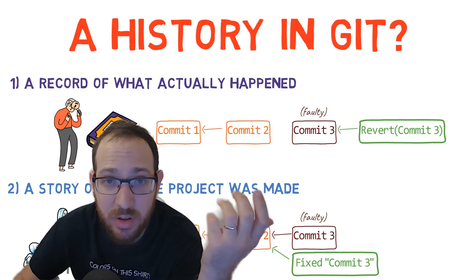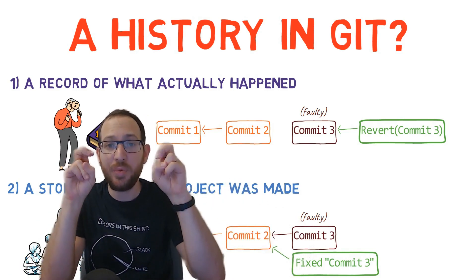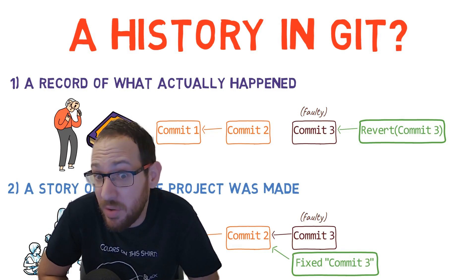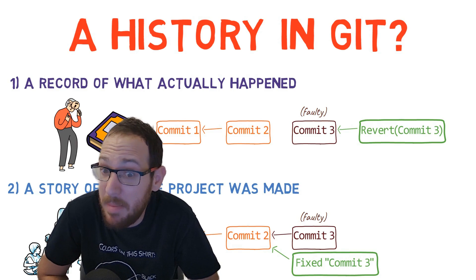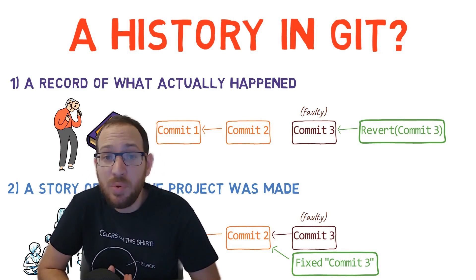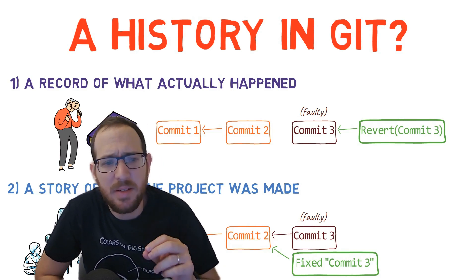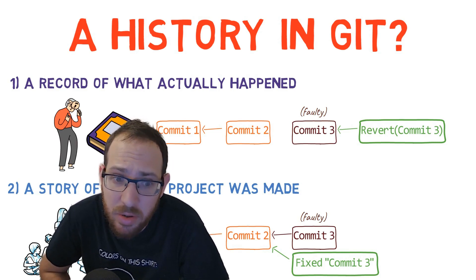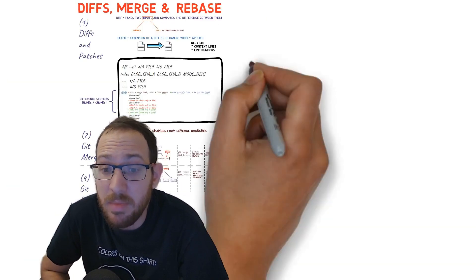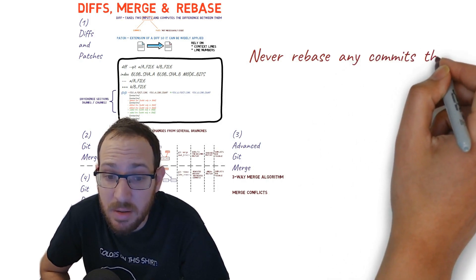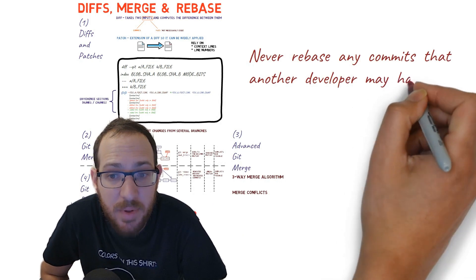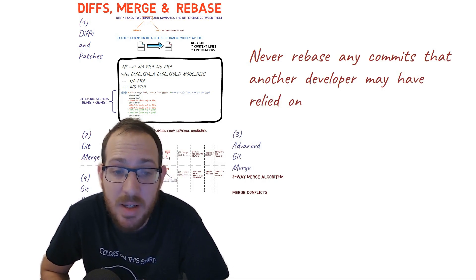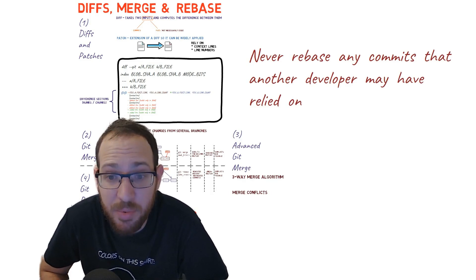Different teams and different projects work differently. For some teams, it's most important to have the true story recorded, so they never use rebase — maybe because some team members aren't as comfortable with rebasing. For another team, it may be that every pull request or merge request must consist of very small commits that tell the feature story in the most coherent way, so they rebase quite often. There is no right or wrong here. There is, however, one wrong thing to do: rebase commits that have already been pushed and that others may have based on. We can rebase local changes before pushing them and merging with the main branch, or rebase a remote branch that only we have modified — but never rebase any commit that another developer may have relied on.